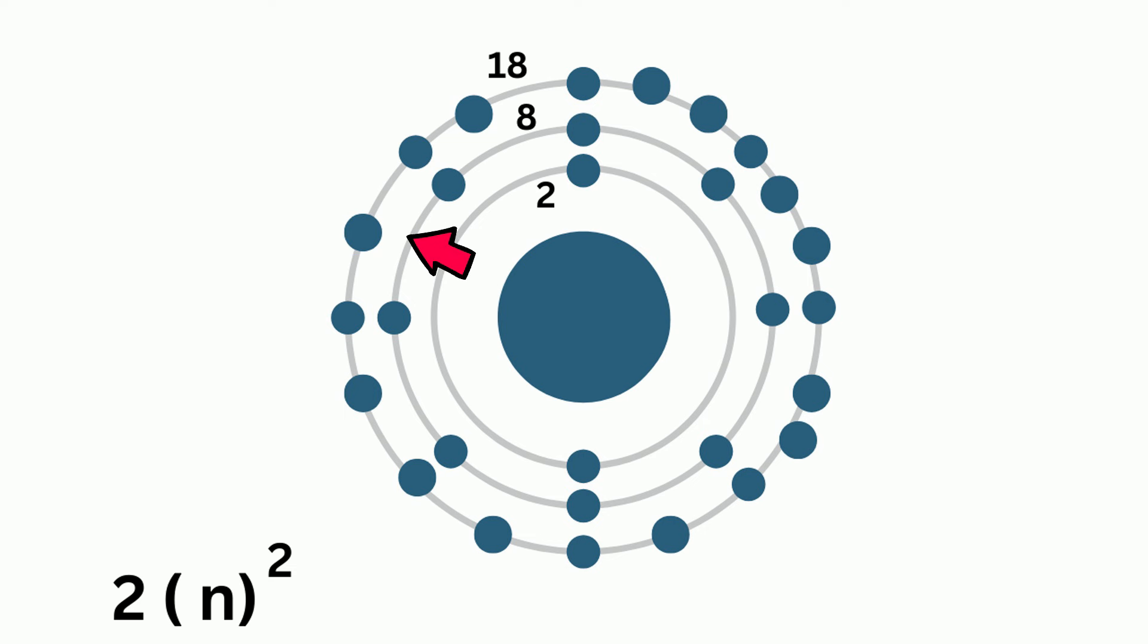You can use a formula to know the maximum number of electrons for each energy level, and it's 2 times n squared, and n is the principal quantum number. And here's a chart with how many electrons each level can hold. Again, remember, as you move away from the nucleus, the energy level increases.